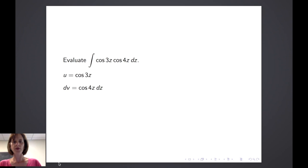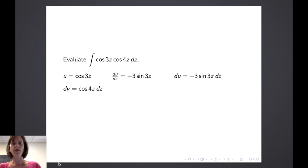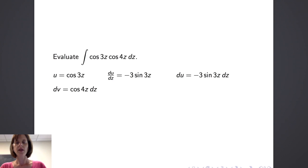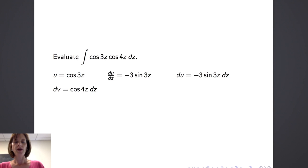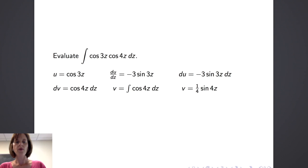We need to find the derivative of u. Taking the derivative of cosine of 3z with respect to z, we get negative 3 sine of 3z. So du is equal to negative 3 sine of 3z dz. To find v, we integrate cosine of 4z and we get v is equal to one-fourth sine of 4z.